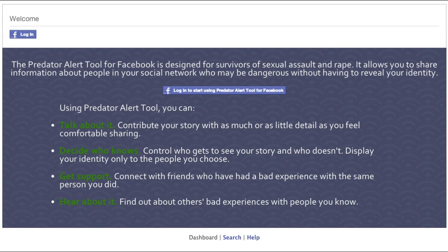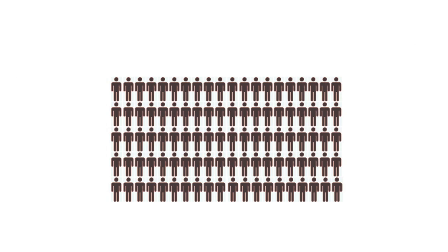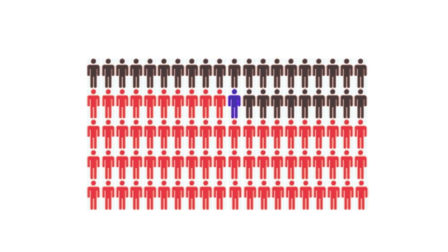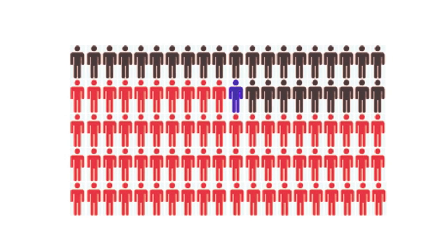The Predator Alert tool for Facebook helps survivors of sexual violence connect with other survivors in their social networks and start conversations with friends about consent. Up to 85% of rapes are committed by someone the survivor already knows, and nearly 70% of American adults use Facebook. This means it's likely that a survivor of sexual violence is Facebook friends or friends of friends with the person who attacked them.